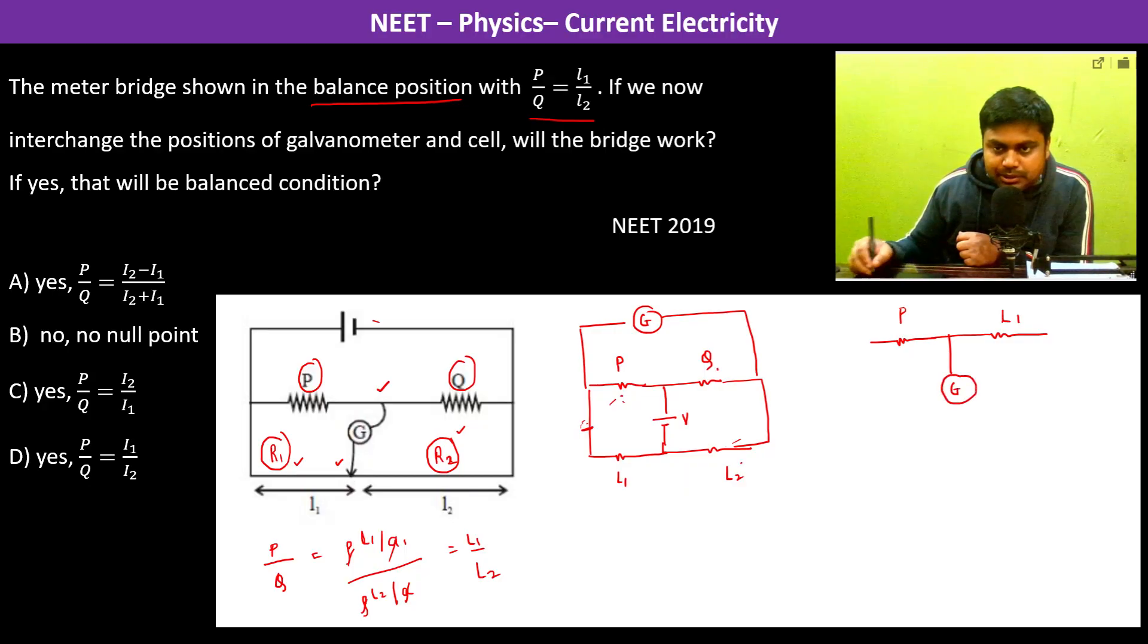Then between Q and L2 there is galvanometer. This galvanometer is connected across these two terminals and these are the same terminals. If I term it as A and this is B, so this is A and this is B.